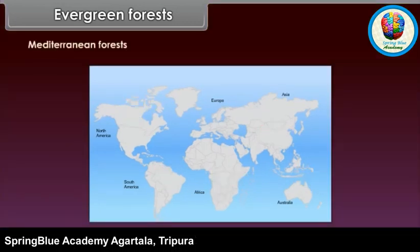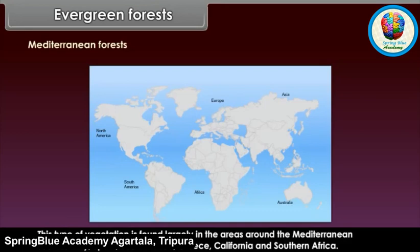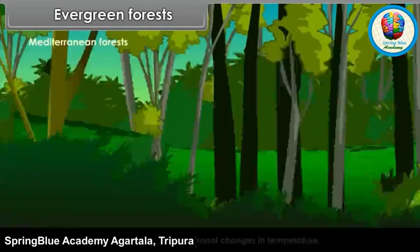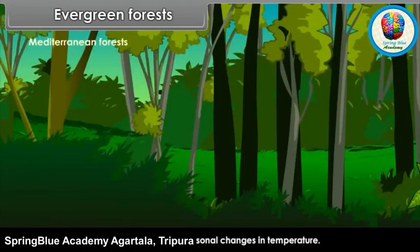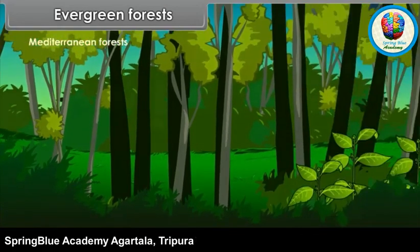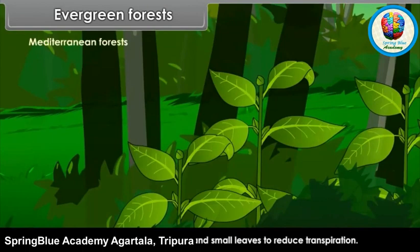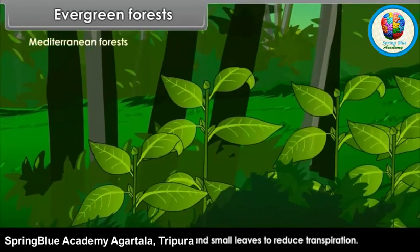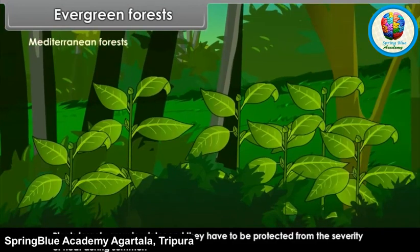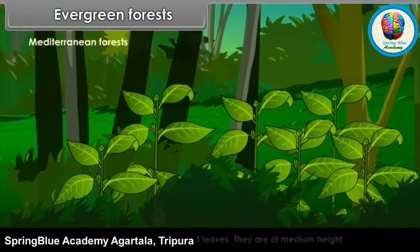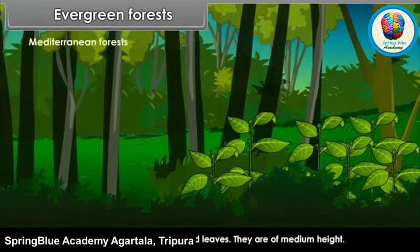Mediterranean Forests: This type of vegetation is found largely in areas around the Mediterranean Sea, like Italy, Spain, South France, Greece, California and Southern Africa. Trees are adapted to seasonal changes in temperature. They withstand the dry summer without shedding their leaves. Plants therefore have spiny, waxy and small leaves to reduce transpiration. Plants largely grow in winter and have to be protected from the severity of heat during summer. Trees are not thick and have broad leaves, and are of medium height.